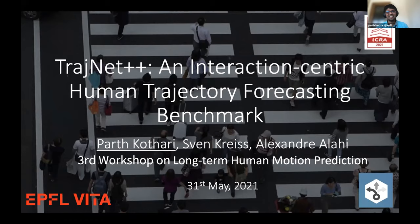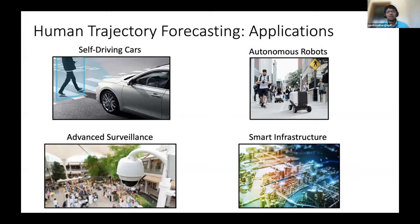So I'll jump right into TrashNet++, which is basically a challenge for human trajectory forecasting. Now, as you have seen in this workshop, human trajectory forecasting is evolving as a very important field in recent years, mainly because of its variety of applications from self-driving cars to having autonomous robots which will interact with a lot of humans to using it in advanced surveillance and also help us building smart infrastructure.